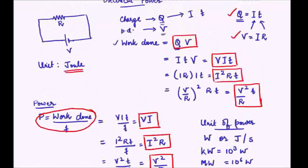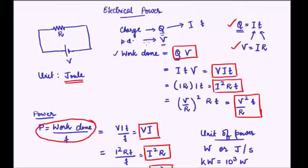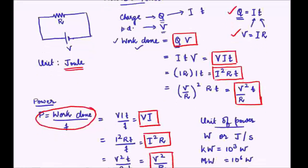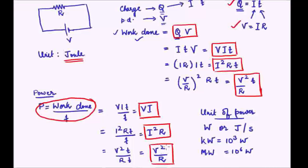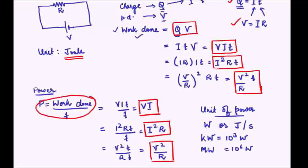To recap: if a potential difference V is applied across a resistor R, we found the work done in four forms and using those, the power consumed by that element. Depending on the information provided, we use the relevant form — we will see this when solving numericals. Next class we will continue from here, studying the commercial units of electrical energy, how the rating of electrical appliances is done, and Joule's law of heating. Hope to see you for these new topics — have a great day, goodbye!